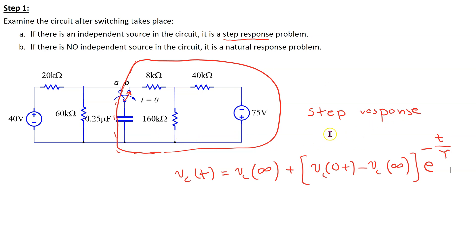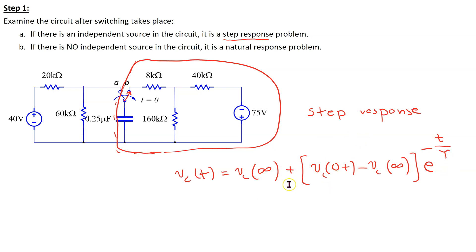In this particular example, we are going to solve for the step response. The next step is to determine the parameters Vc(∞), Vc(0+), and tau that make up the step response.